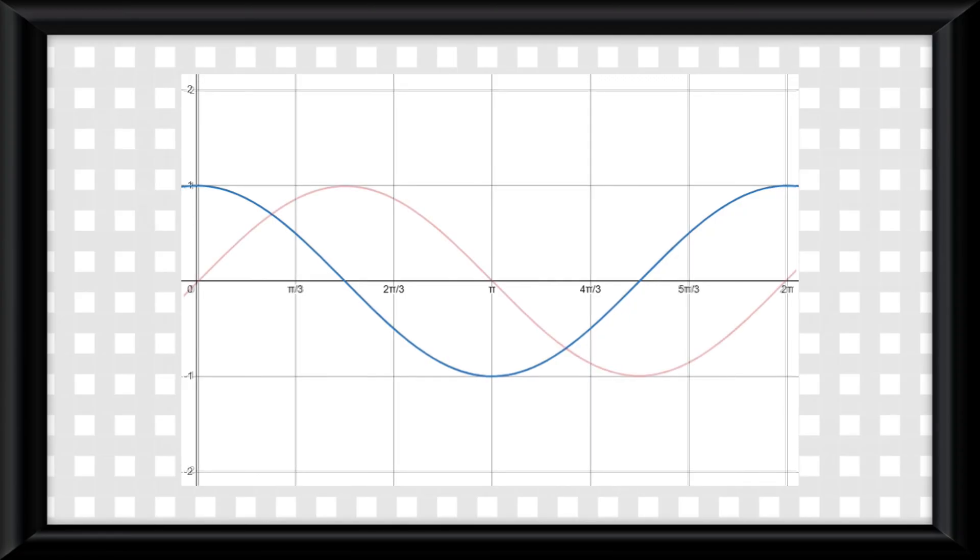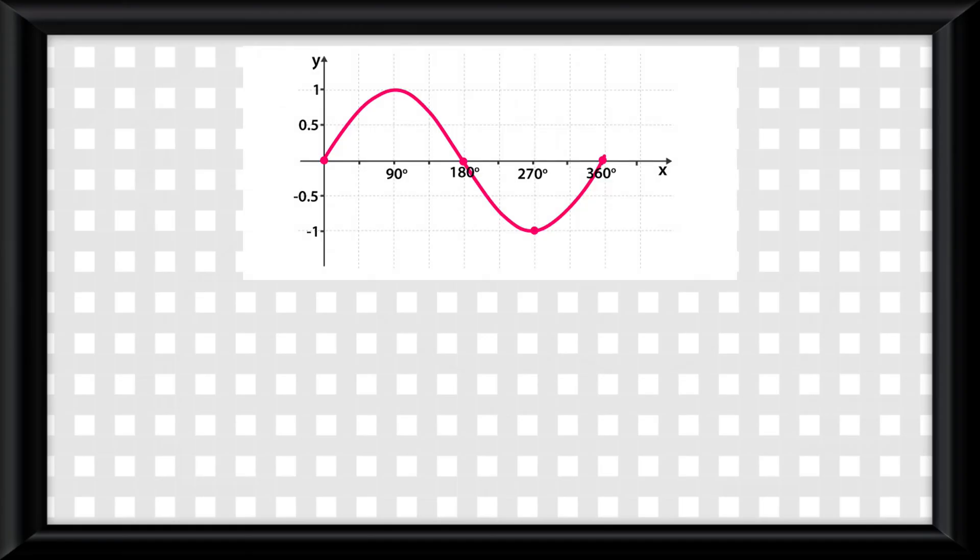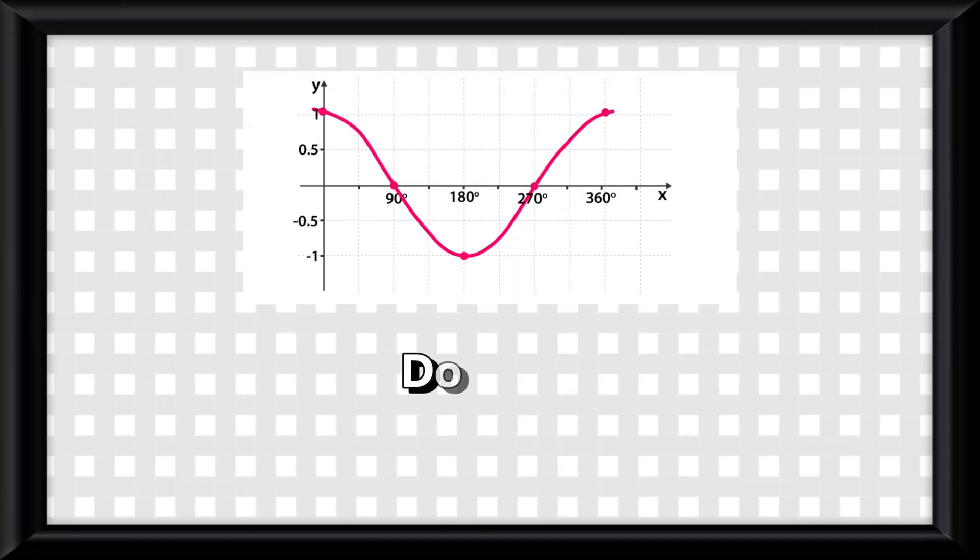The cosine graph is a sine graph with a horizontal translation of minus pi over 2. So that means that all the rules of a sine graph apply to a cosine graph. The domain is all real numbers, and the range is minimum to maximum in brackets.